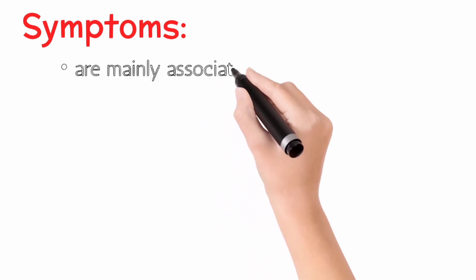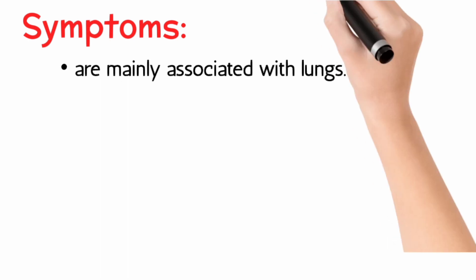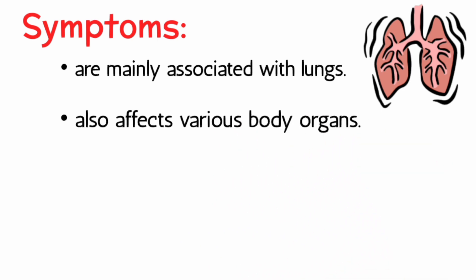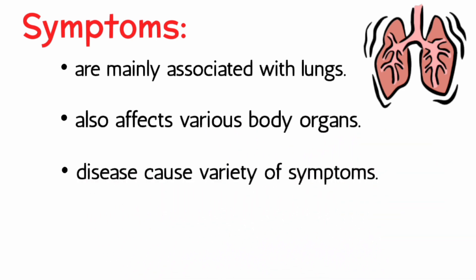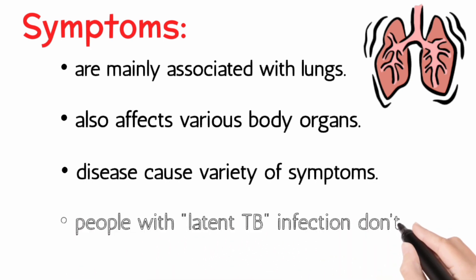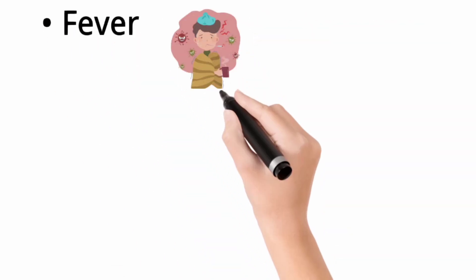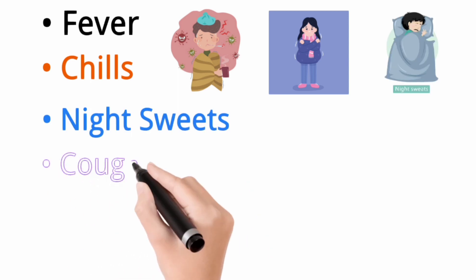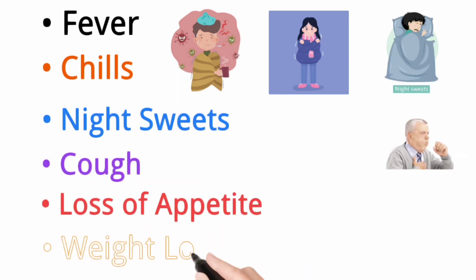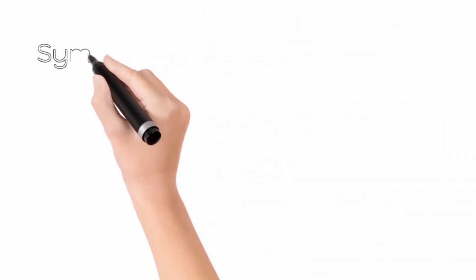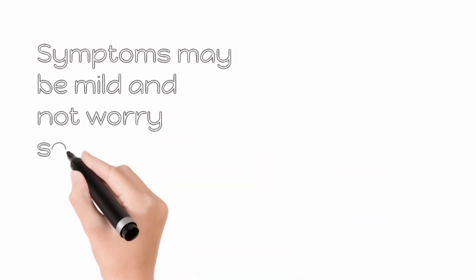Although tuberculosis is most frequently associated with symptoms involving the lungs, it can affect any organ of the body. People with latent TB infection have no symptoms. The usual symptoms of TB include fever, chills, night sweats, cough, loss of appetite, weight loss, blood in the sputum, and loss of energy. The symptoms may be mild and may not seem particularly worrisome to the patient, but in other people the symptoms become chronic and severe.